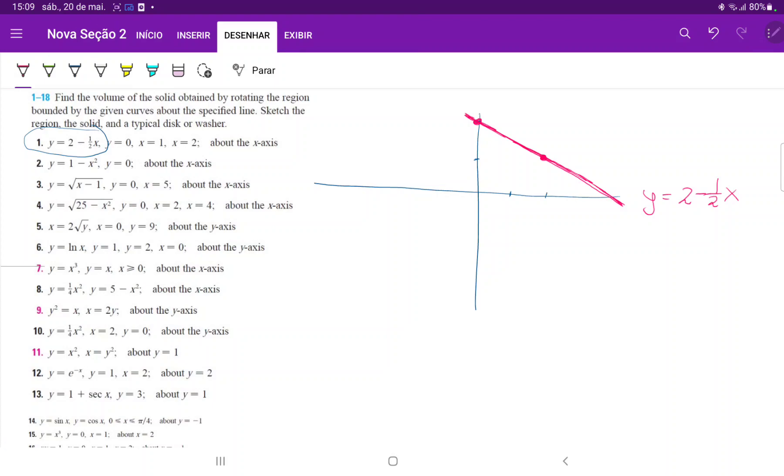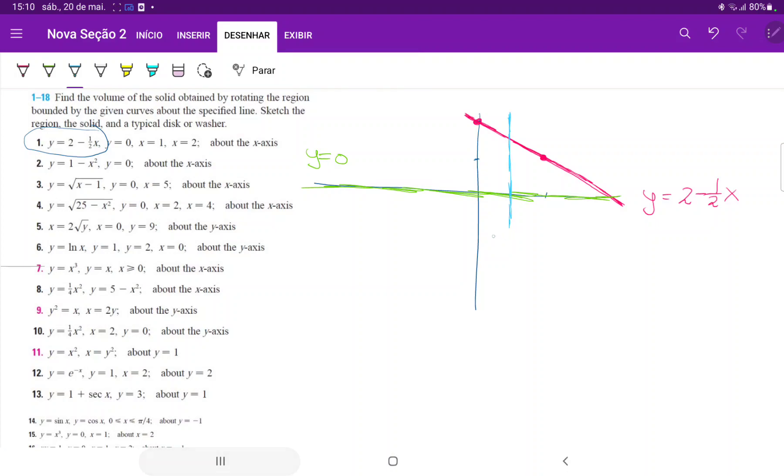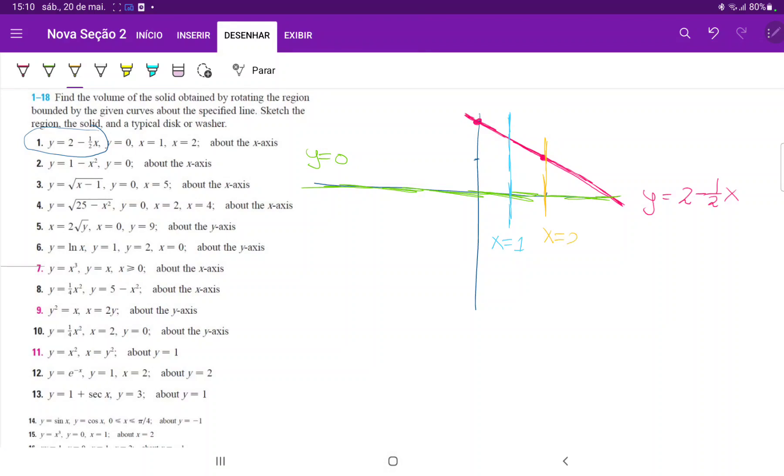Now let's draw the other one. So we have the line y equals 0, which is over here. This is the line y equals 0. And then we have the line x is equal to 1. So x is equal to 1 is over here. This is x is equal to 1, and then we have x is equal to 2. This is our x is equal to 2.